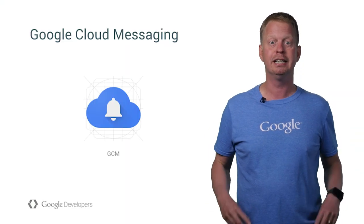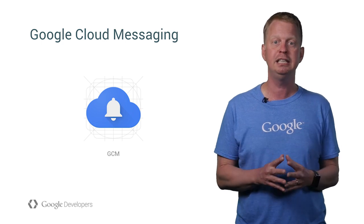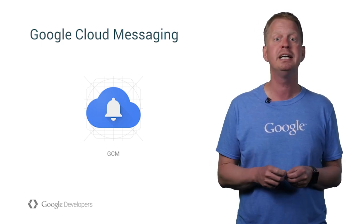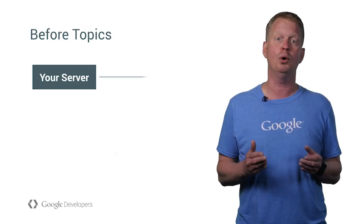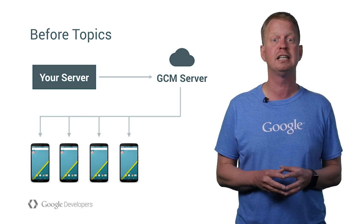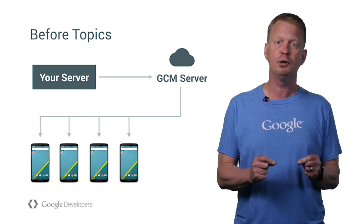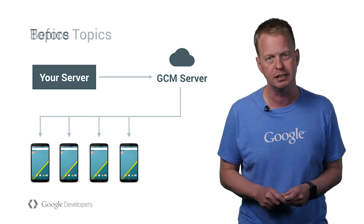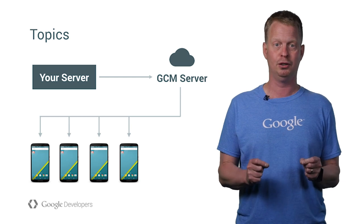Google Cloud Messaging is one of the most powerful APIs in Google Play Services, providing messaging between your mobile app and a back-end server. And now we've made it even better with support for topic-based subscriptions. Before topics, all the apps running on all the devices had to filter out messages that were not relevant, because it was not possible for the running app to tell GCM which messages it was interested in. With the new topic-based subscriptions, this problem is solved.